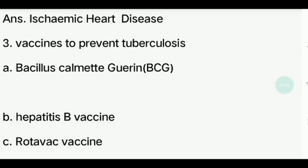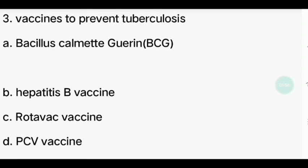Third question. Which vaccine is used to prevent tuberculosis? Options: BCG (Bacillus Calmette-Guérin), Hepatitis B vaccine, Rotovac vaccine, PCV vaccine. Answer is BCG — Bacillus Calmette-Guérin.